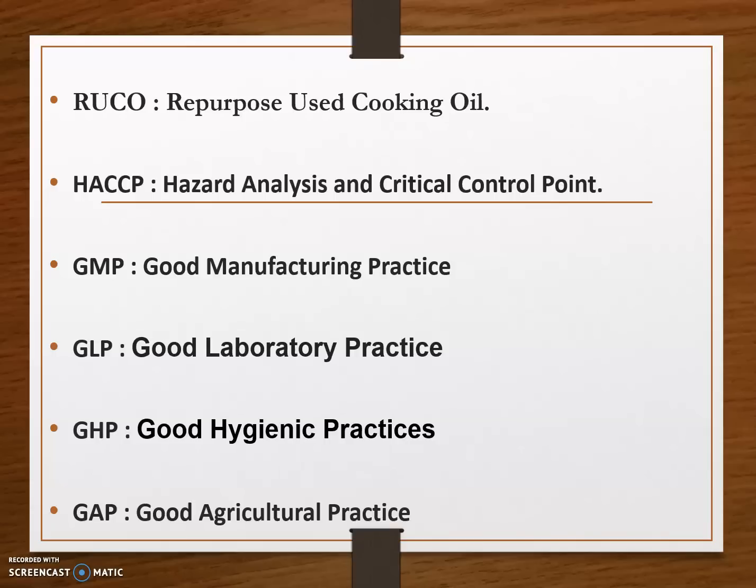Next is HACCP, which stands for Hazard Analysis and Critical Control Point. It is an internationally recognized system aimed at reducing the risk of safety hazards in food. The HACCP system requires that potential hazards are identified and controlled at specific points in the process.